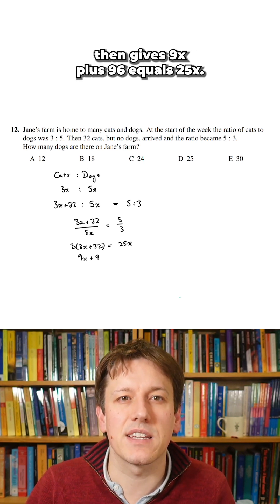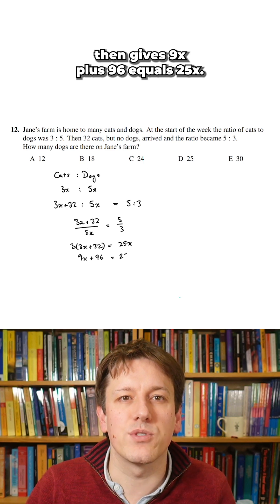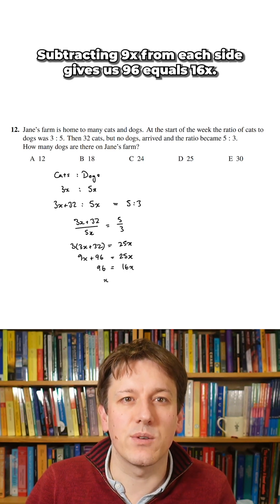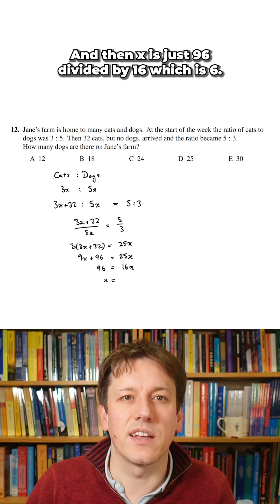Multiplying out the brackets then gives 9x plus 96 equals 25x. Subtracting 9x from each side gives us 96 equals 16x and then x is just 96 divided by 16 which is 6.